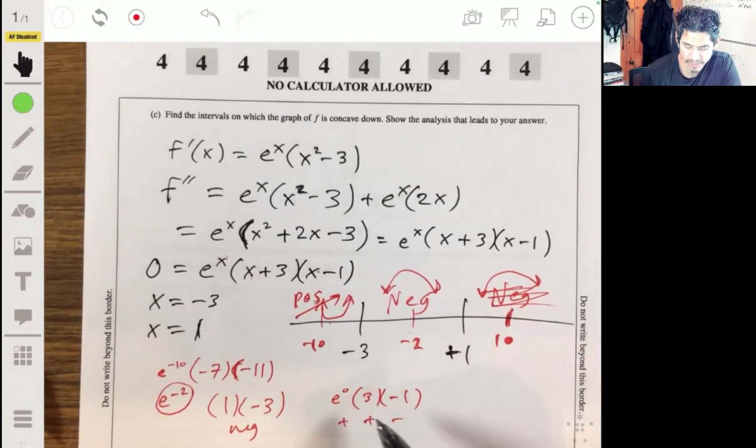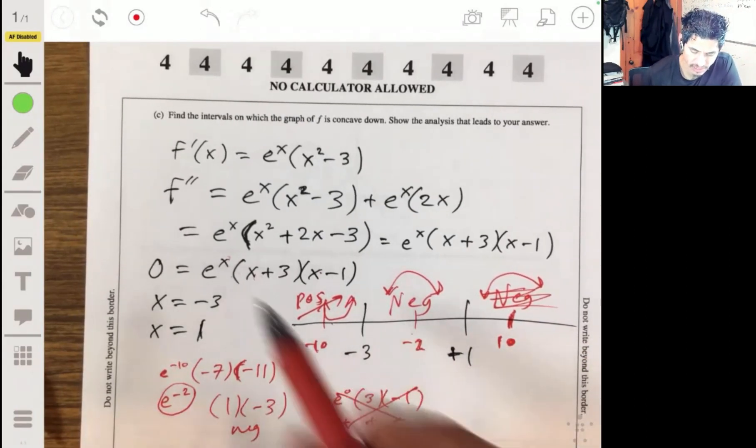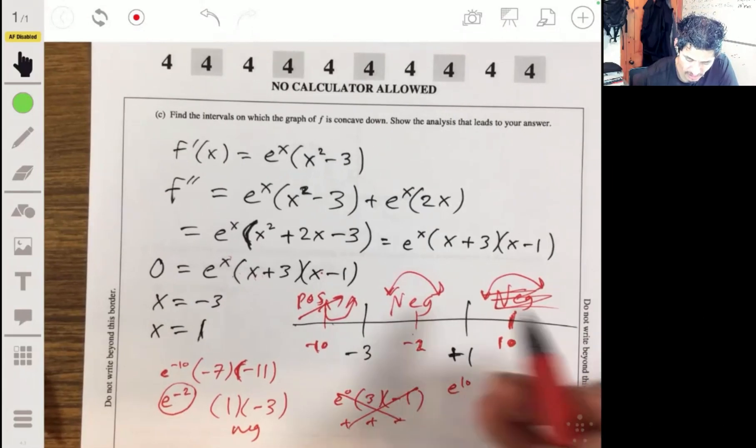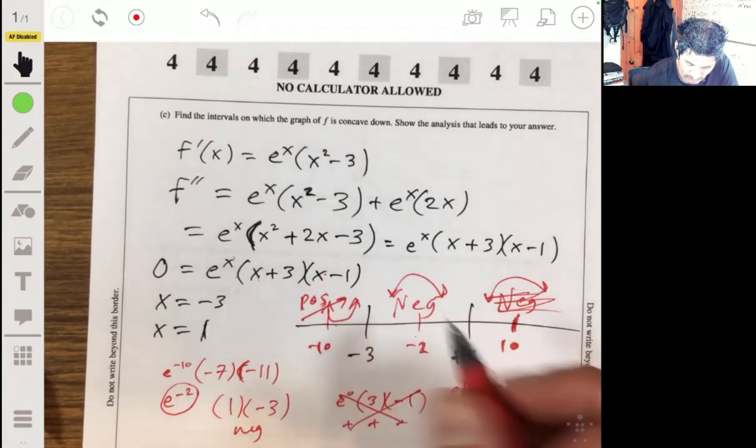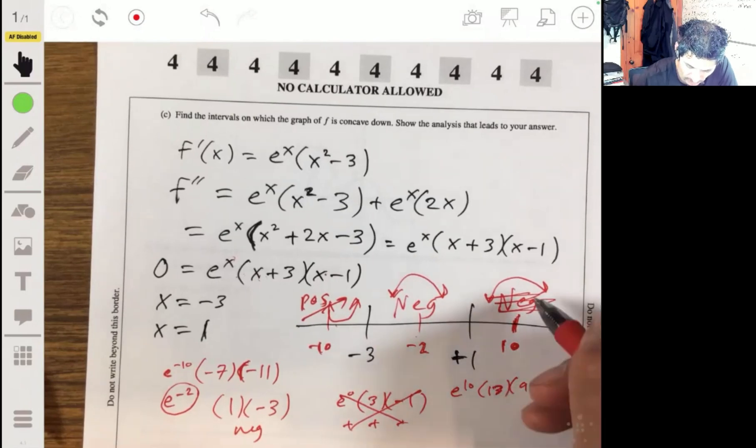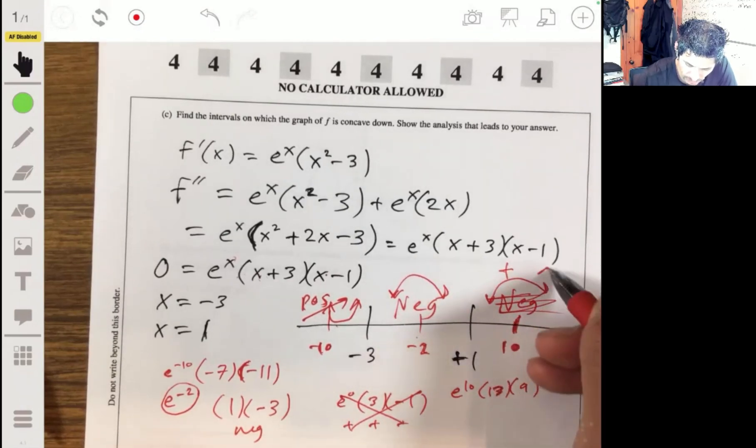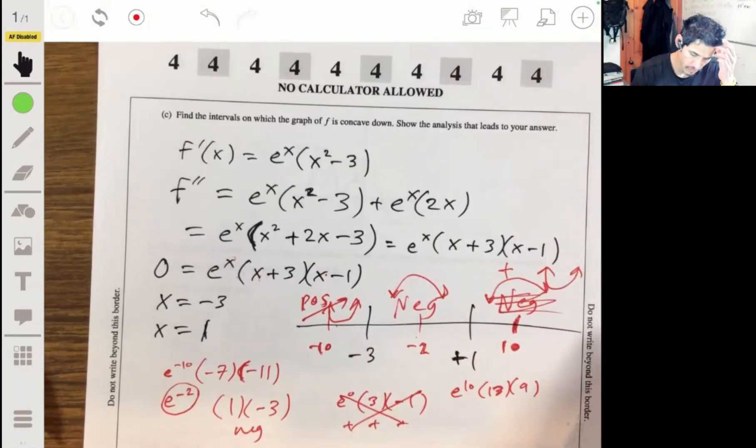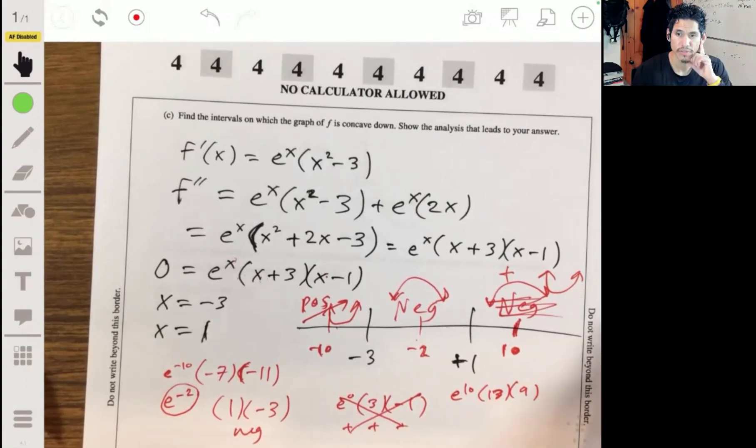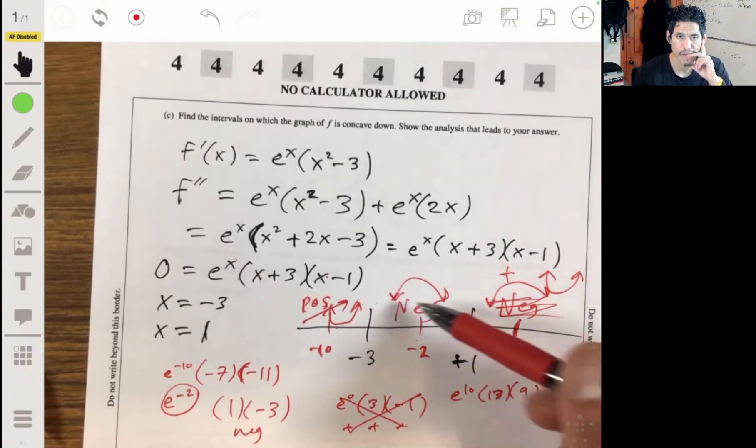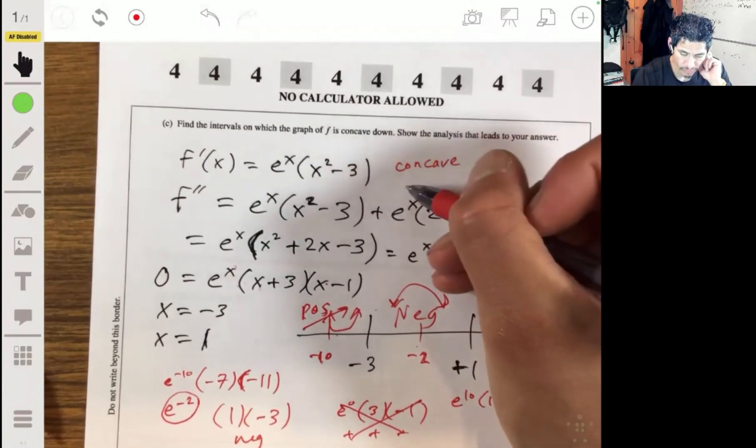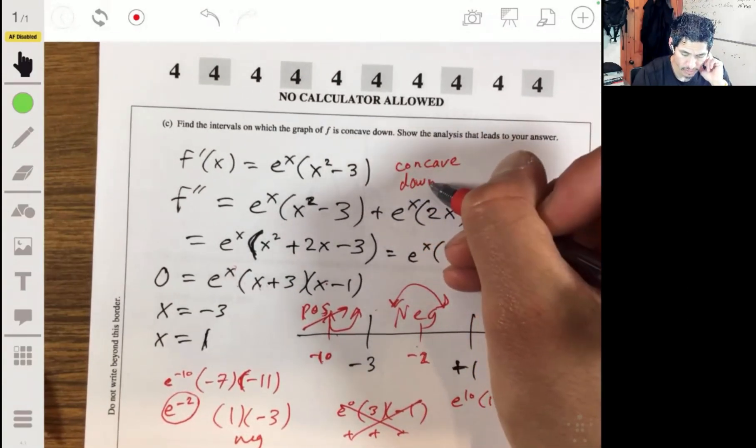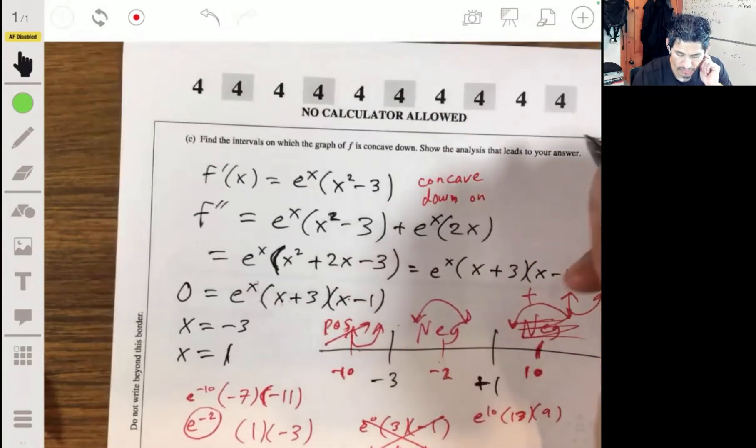So let's check positive 10. Plug 10 into there, e to the 10, 13, 10 minus 1, 9. So all positive. So all good. It's positive in here. So it's only concave down in here. So concave down on negative 3 to 1.